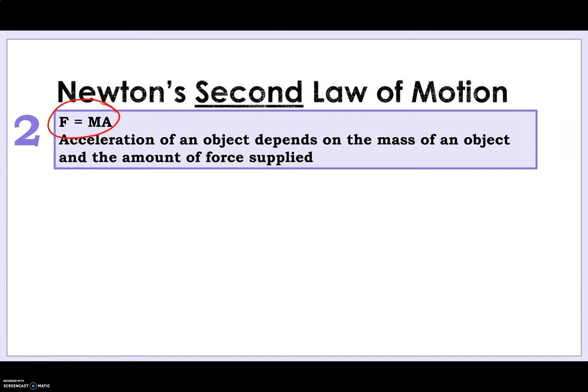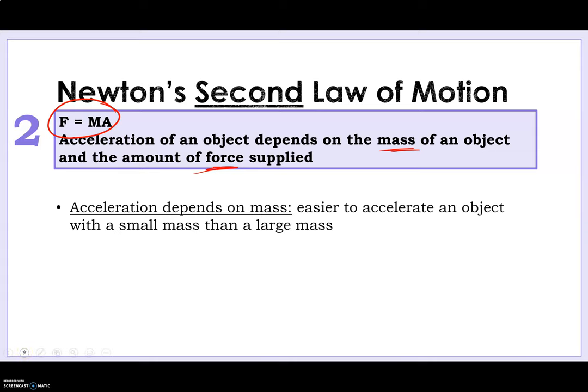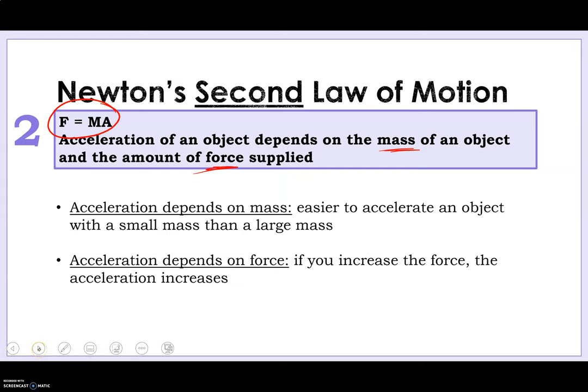Newton made a second law, and they're pretty much related. So this second law of motion is all about our force equation, f equals ma. Acceleration of an object depends on the mass of an object and the amount of force supplied. That's just a way to explain force equals mass times acceleration in words. So thinking about how acceleration depends on mass, as we just talked about, it's easier to accelerate an object with a small mass than a large mass. We know that. Easier to move smaller objects. Thinking about force, if you increase the force, the acceleration of an object increases.